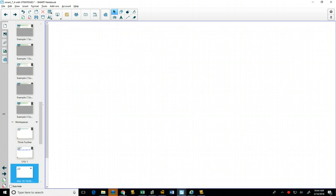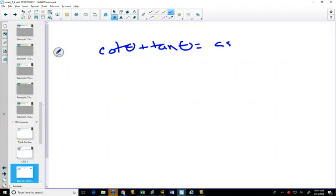First one. Cotangent theta plus tangent theta equals cosecant theta, secant theta. Draw your line. This is a classic example of changing things to sine and cos. Because I look at my functions and there is no squared, so I can't use any of those new formulas.